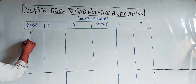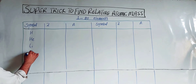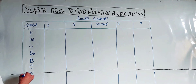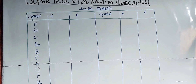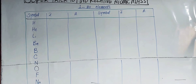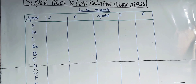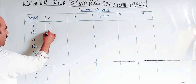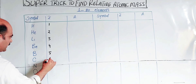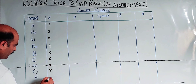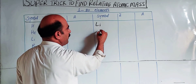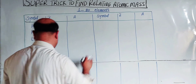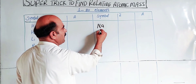The elements from 1 to 10 are: Hydrogen, Helium, Lithium, Beryllium, Boron, Carbon, Nitrogen, Oxygen, Fluorine, Neon. Their atomic numbers are: Hydrogen 1, Helium 2, Lithium 3, Beryllium 4, Boron 5, Carbon 6, Nitrogen 7, Oxygen 8, Fluorine 9, Neon 10.